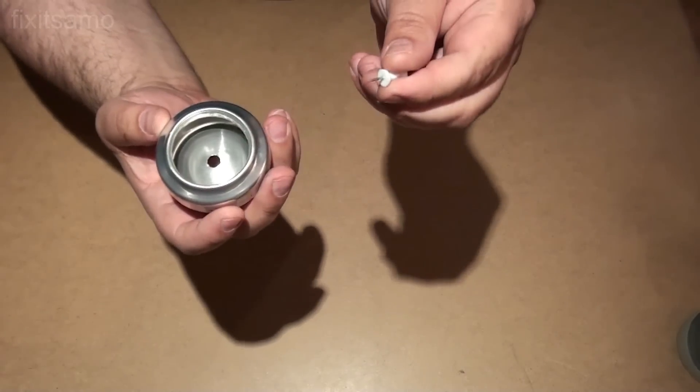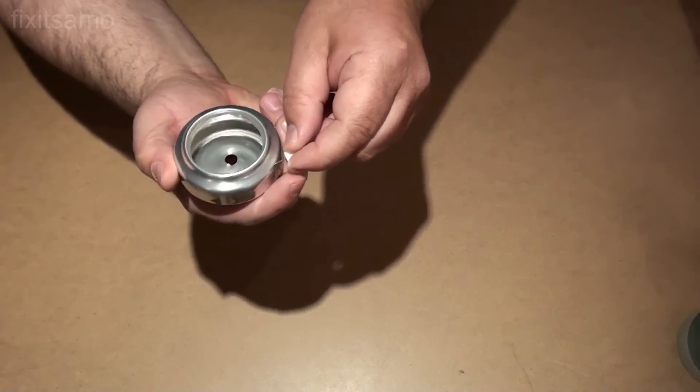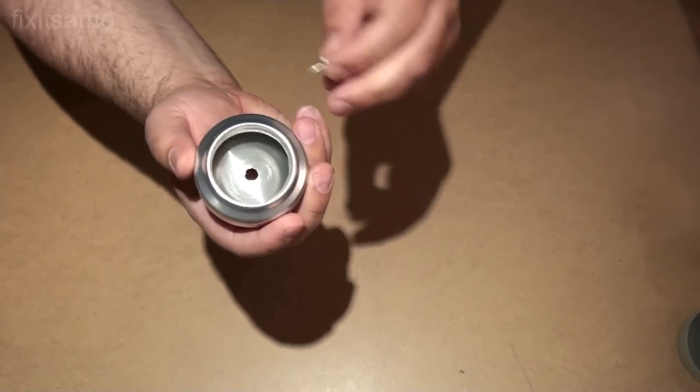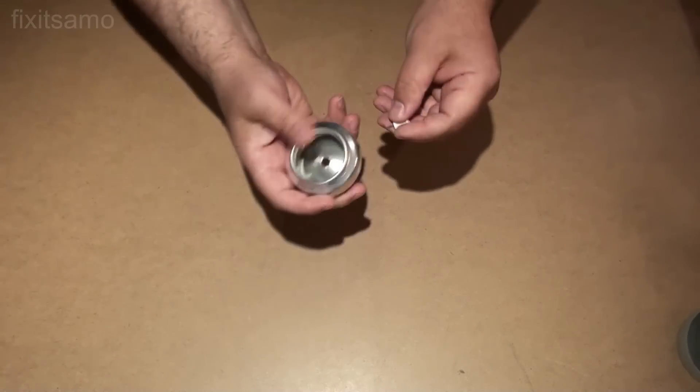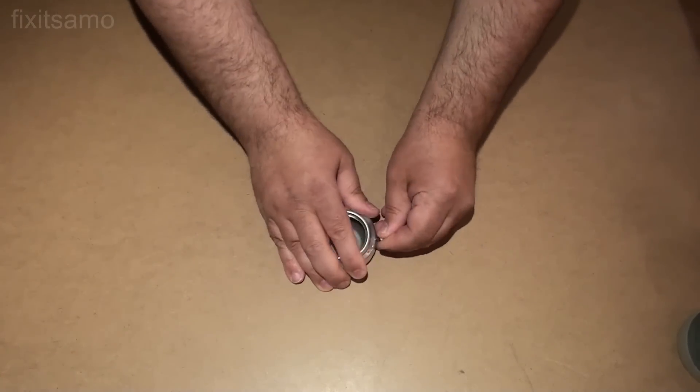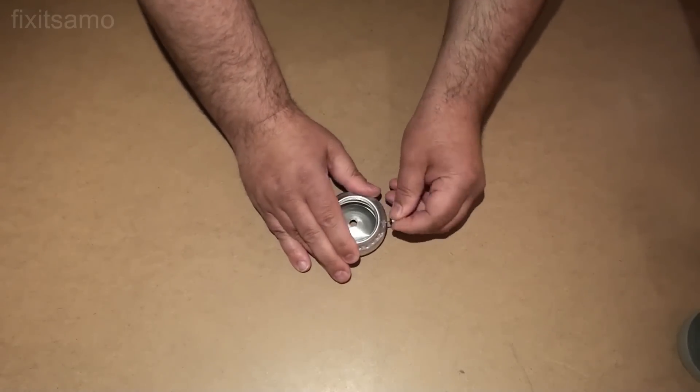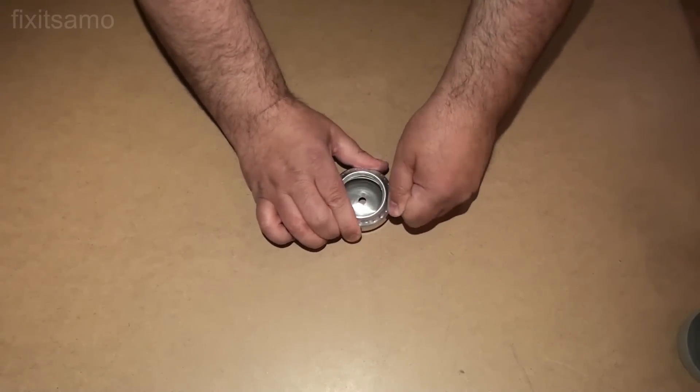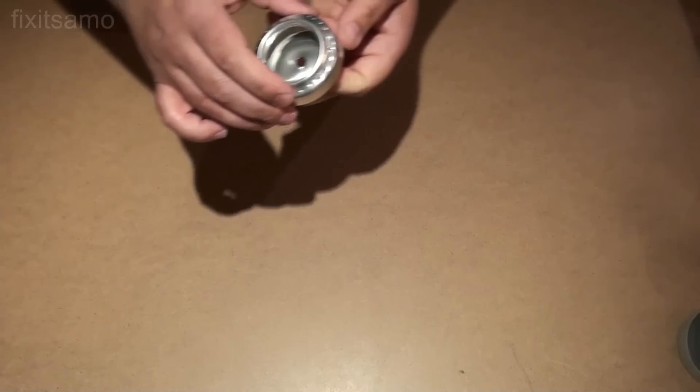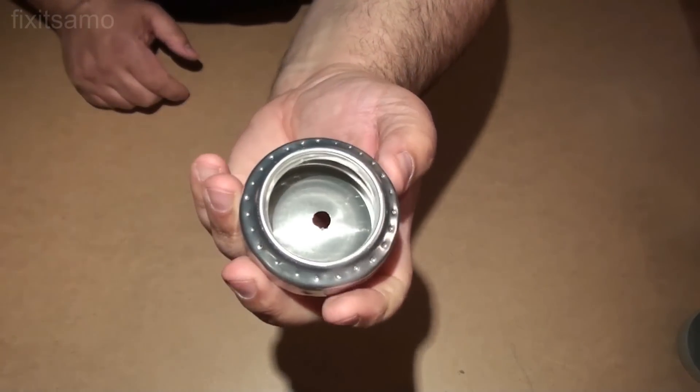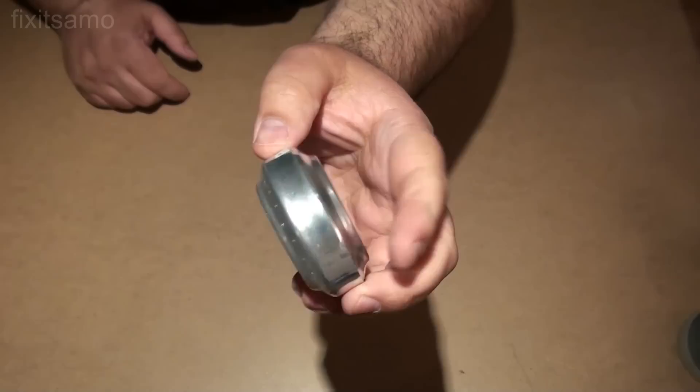The next step is to make holes all around the circle, the top circle over here. That's how it's supposed to look like.